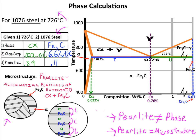Pearlite is a microstructure made up of the phases alpha and iron carbide. The microstructure below the eutectoid temperature at the eutectoid composition is called pearlite, which is alternating platelets of eutectoid alpha and iron carbide. Notice that the phase weight fractions are similar to the size of the corresponding microstructure features. The alpha is 0.89, so it takes up a lot more space in this microstructure than the iron carbide.